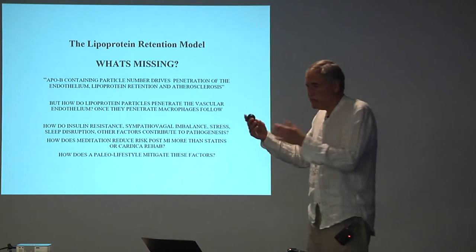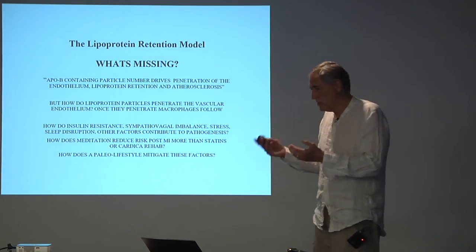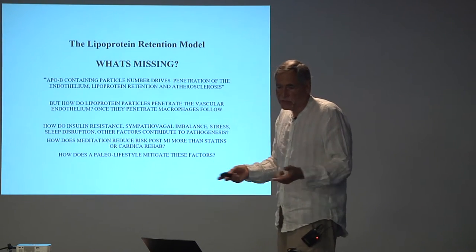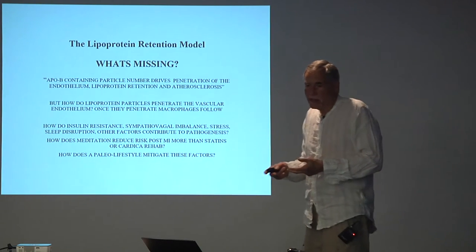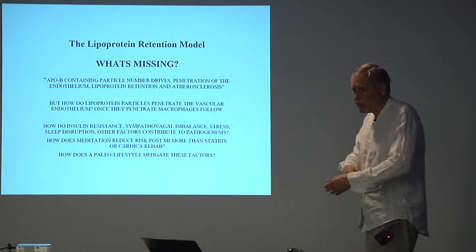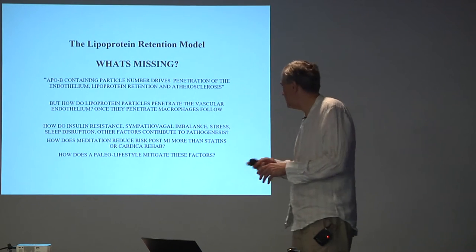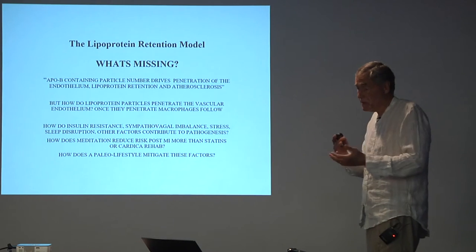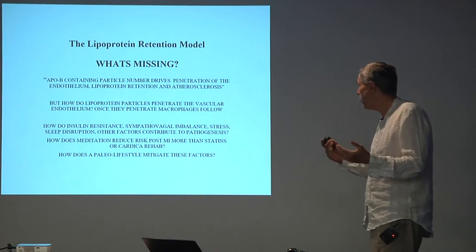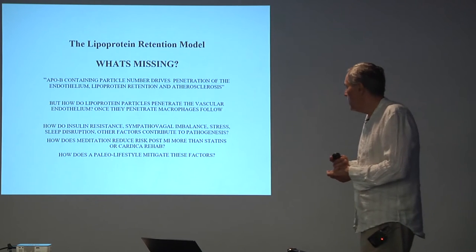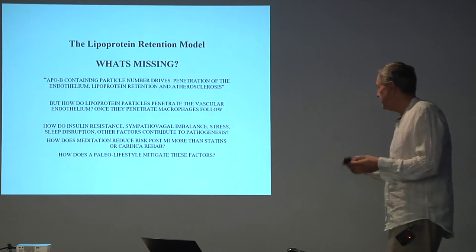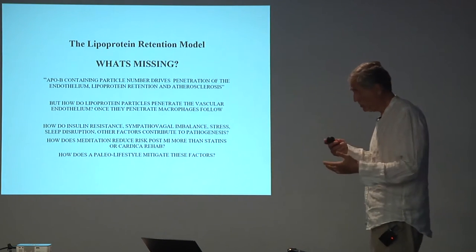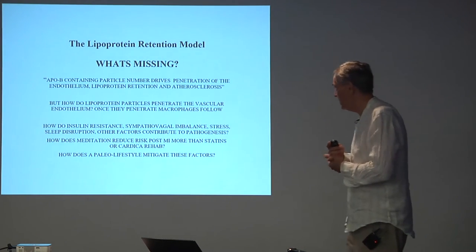After plaque develops, of course, inflammation and other factors enter into the picture of whether that plaque becomes unstable and results in a myocardial infarction, a non-hemorrhagic stroke, or symptomatic peripheral arterial disease. But if we're going to address root causes from a functional medicine point of view, we need to talk about how the first plaque forms. How do insulin resistance, sympathovagal balance, sleep disruption, and other factors contribute to pathogenesis?